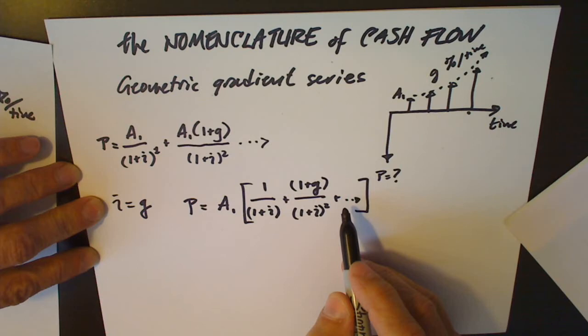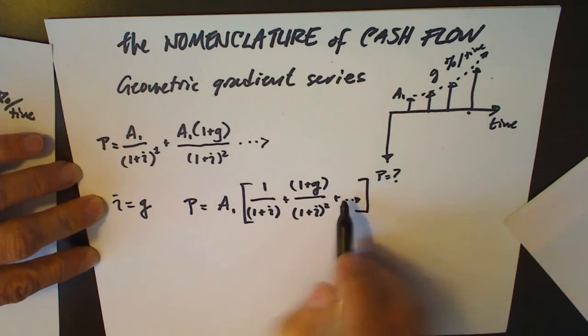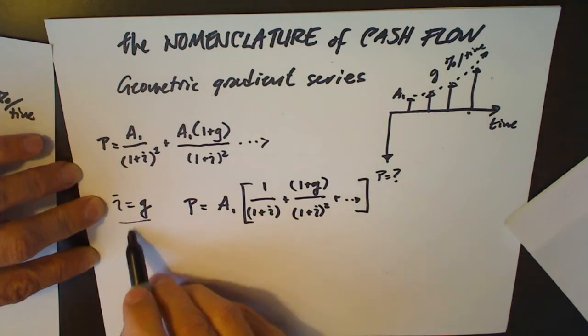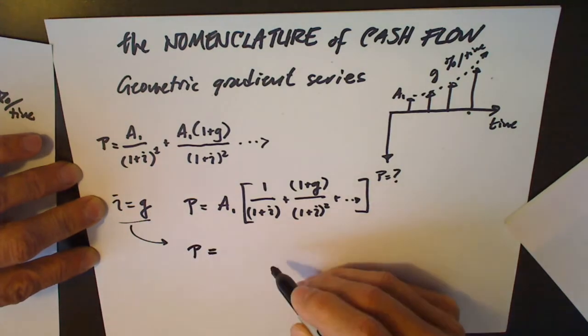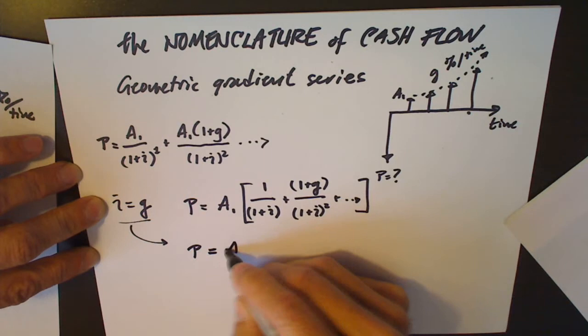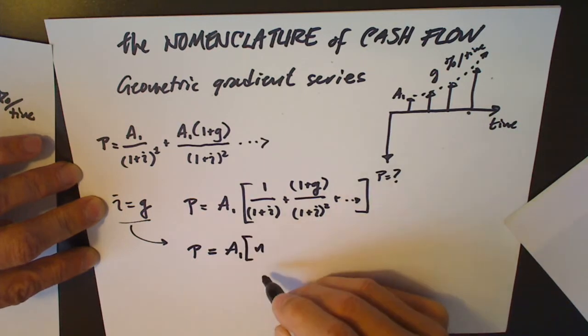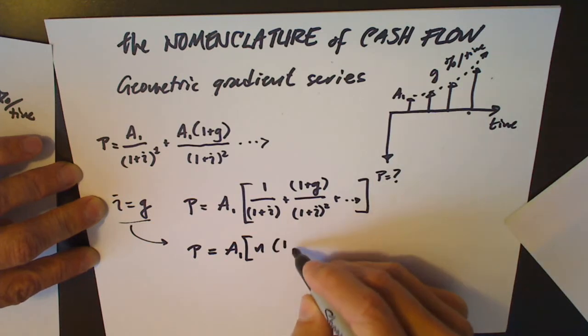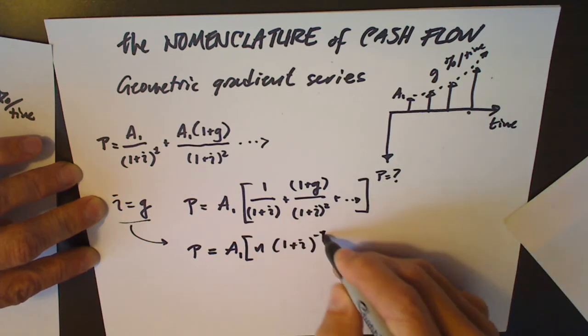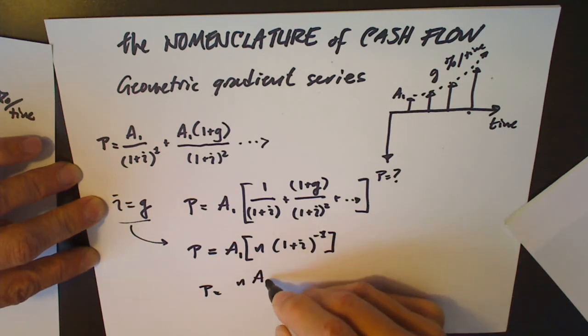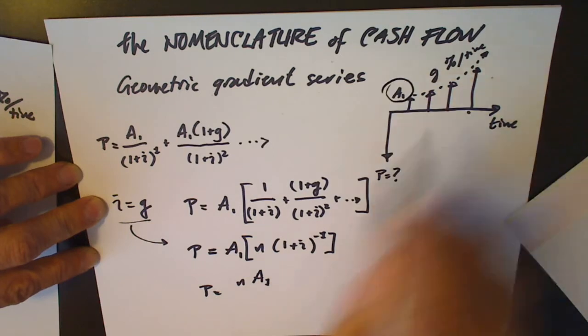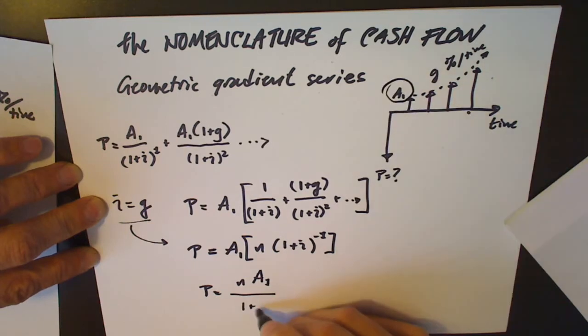In the numerator of the next term which I haven't shown, in the special case for when I equals G, this simplifies to P equals the amount of the first payment times the total number of payments one plus I to the negative one. Another way to write that is P equals the amount of the first payment over one plus I.